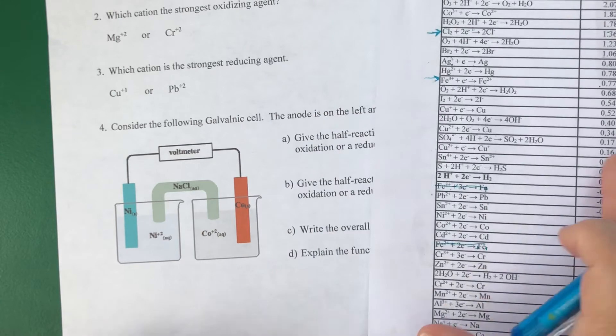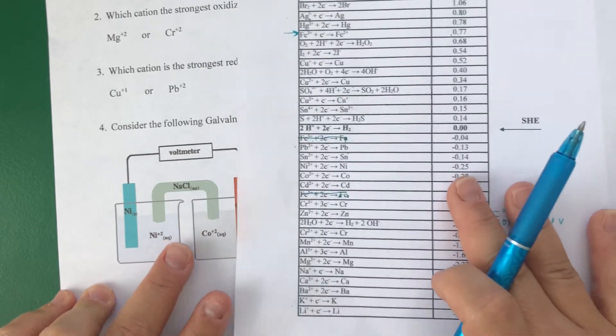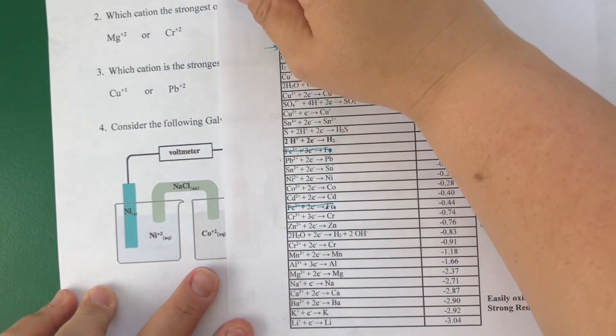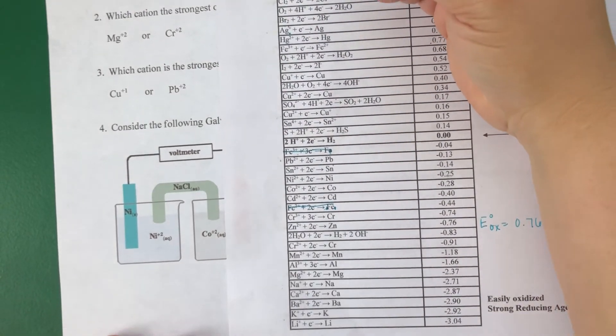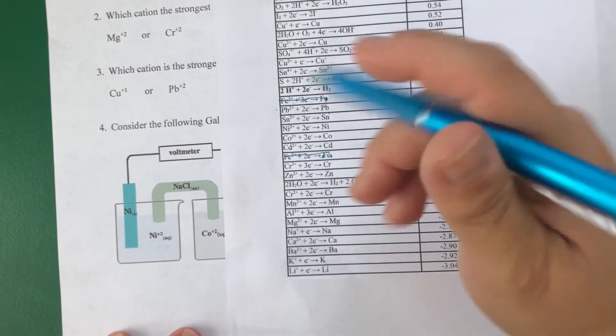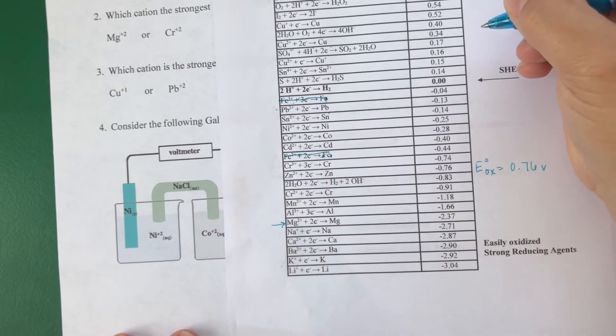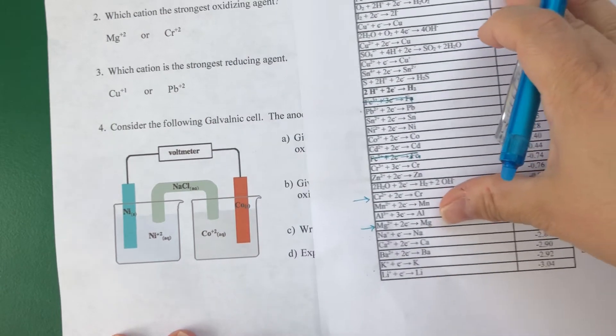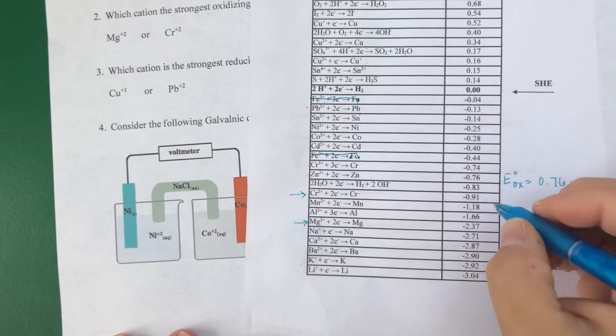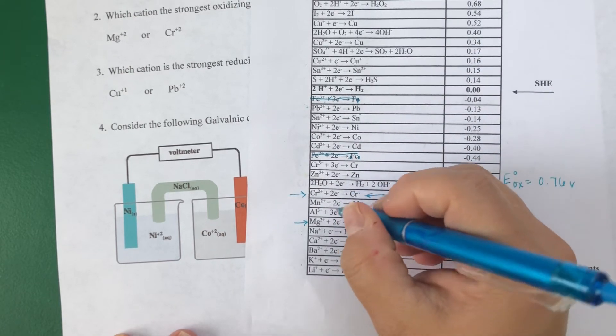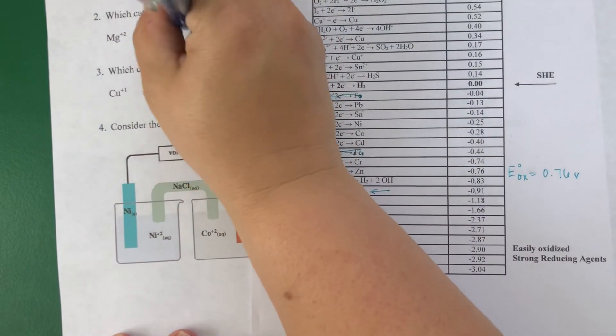Which cation would be the strongest oxidizing agent? I've got to go back to my table. Magnesium ion is way down here, and my chromium ion is way up here. So of these two, we're looking for the strongest oxidizing agent. So it would be the one that's more likely reduced. That would be the one higher up, right? So chromium.